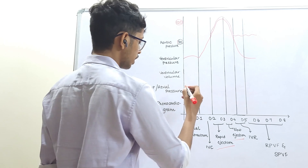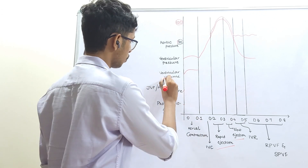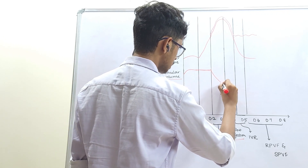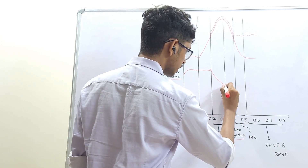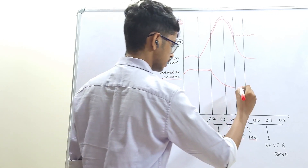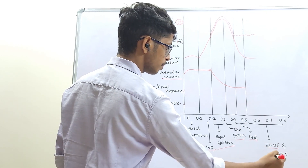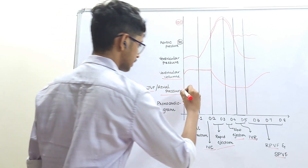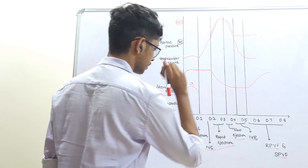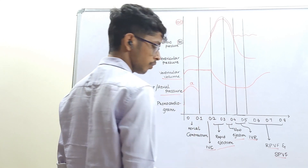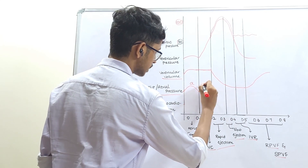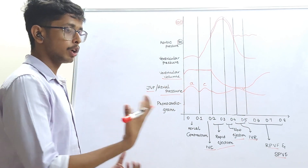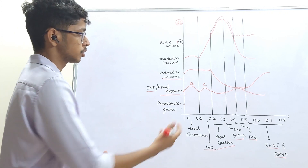Regarding ventricular volume on the graph: during atrial contraction, the 20% active filling causes a slight increase in ventricular volume. During isovolumetric contraction, there is no change in ventricular volume. During the rapid ejection phase, there is a rapid decrease. During the slow ejection phase, the decrease is less steep. During isovolumetric relaxation, ventricular volume remains constant. During rapid and slow passive ventricular filling, the volume increases. For JVP: the A-wave appears during atrial contraction; the C-wave appears during the initial phase of ventricular contraction due to bicuspid valve bulging into the atria; the V-wave appears during the ejection phases due to blood accumulating in the atria acting as a reservoir.